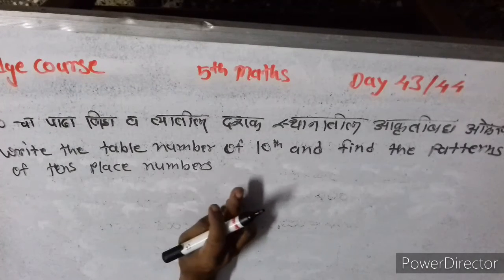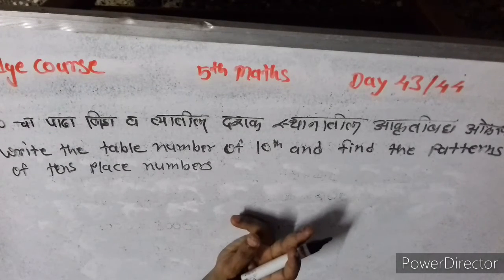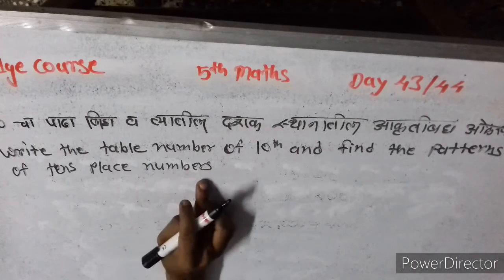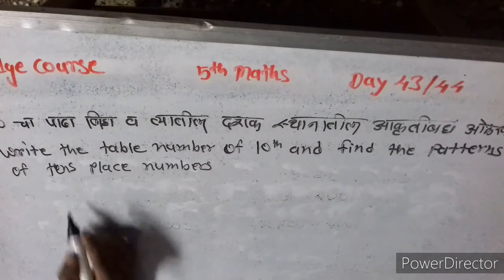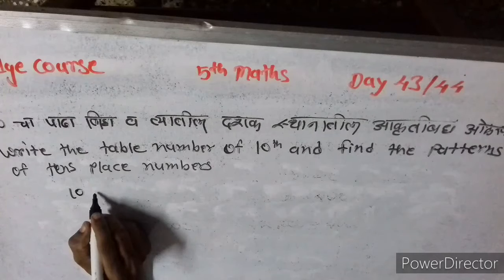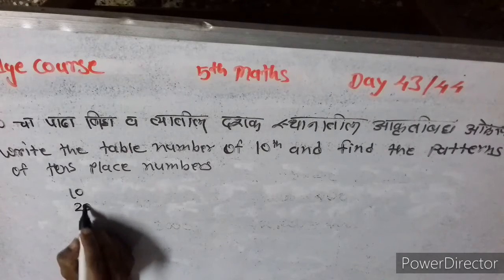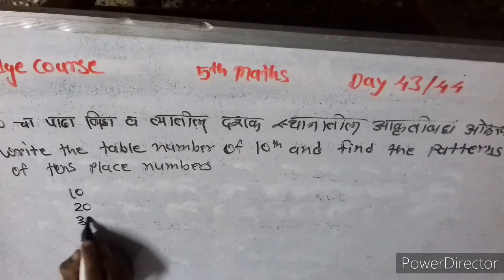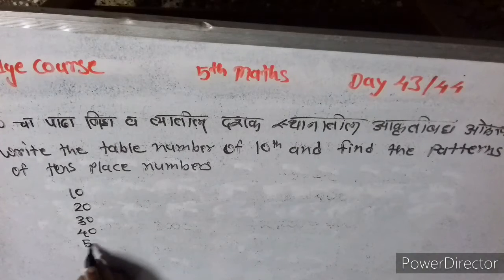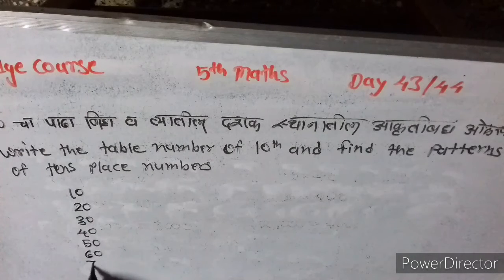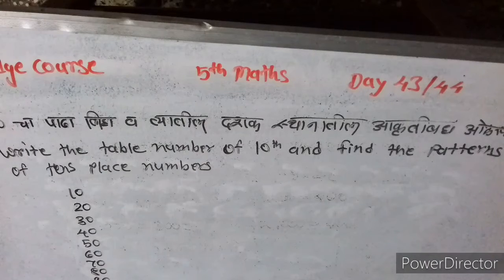Write the table number of 10 and find the pattern of 10's place number. 10 ones are 10, 10 twos are 20, 10 threes are 30, 40, 50, 60, 70, 80, 90, and 100.